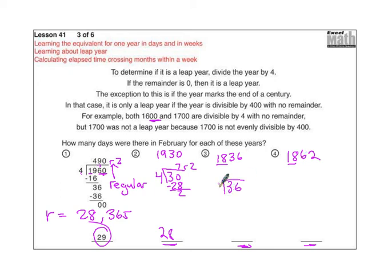36 divided by four is nine. It goes in evenly. There is no remainder. So this is not a regular year, which means it is a leap year, 29 days.